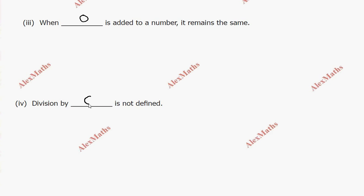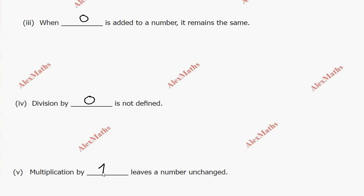Subdivision 5: multiplication by one leaves a number unchanged. That is, multiplication by 1 is the multiplicative identity — the number remains the same when multiplied by 1.